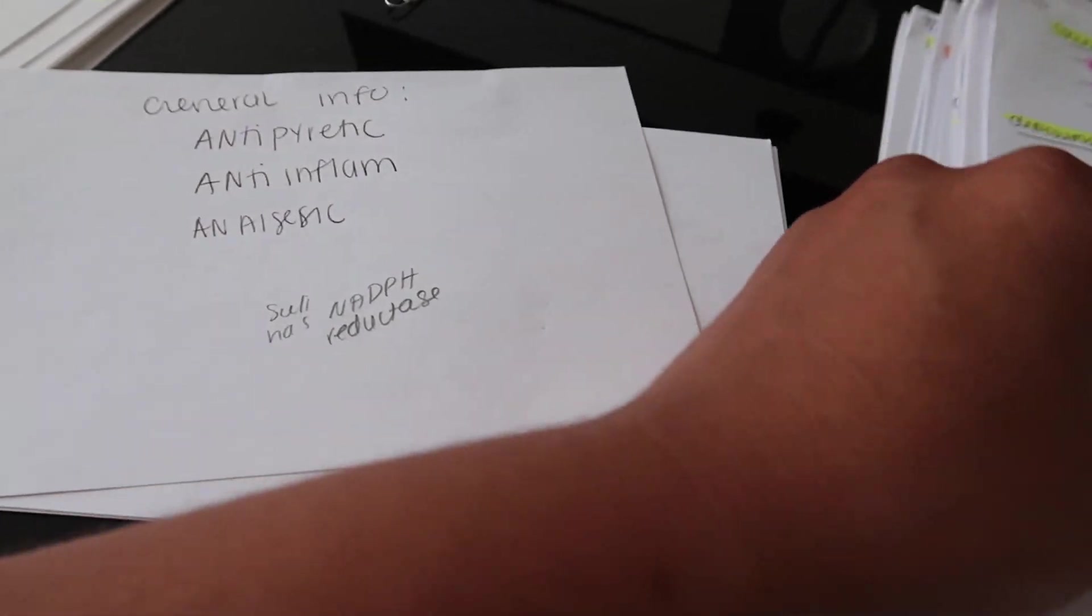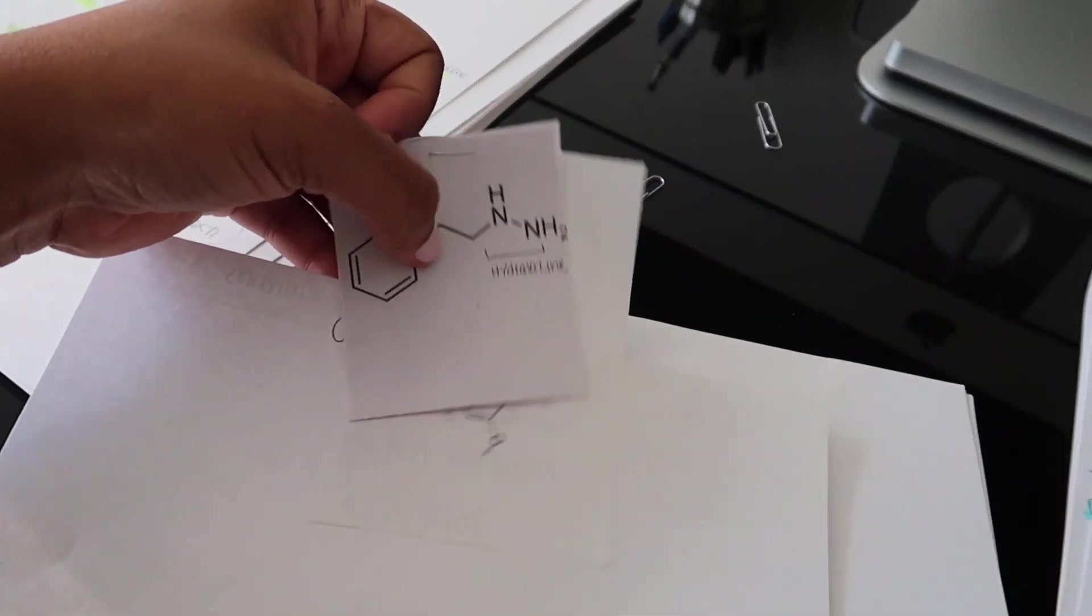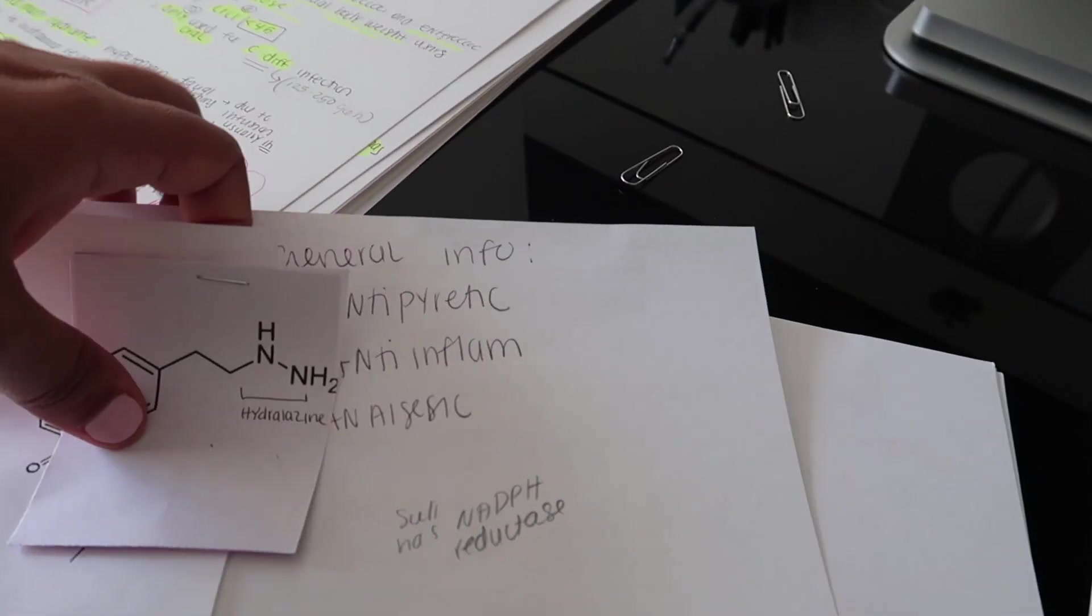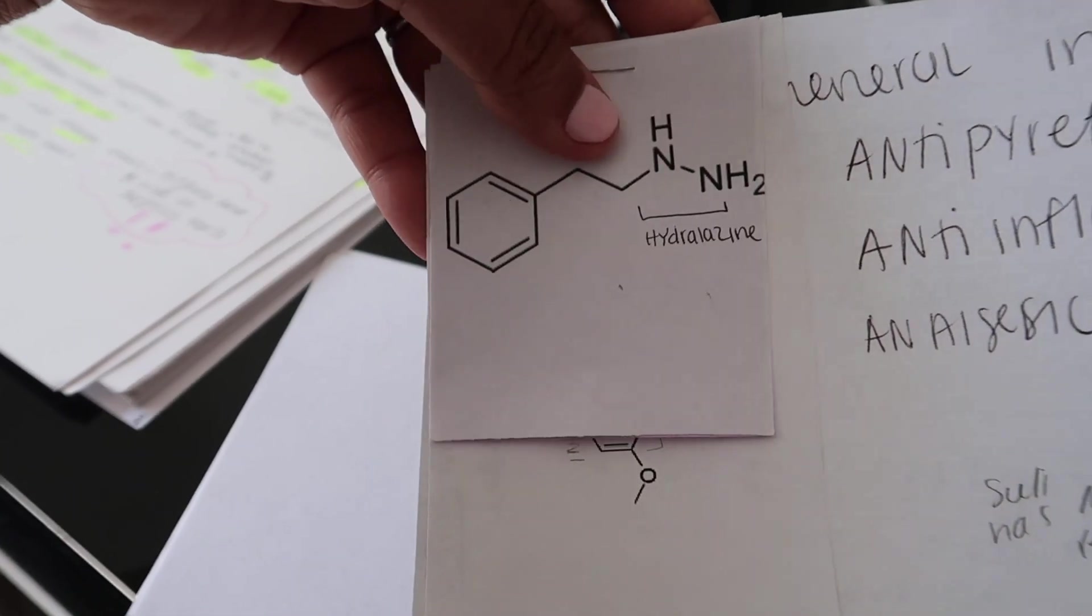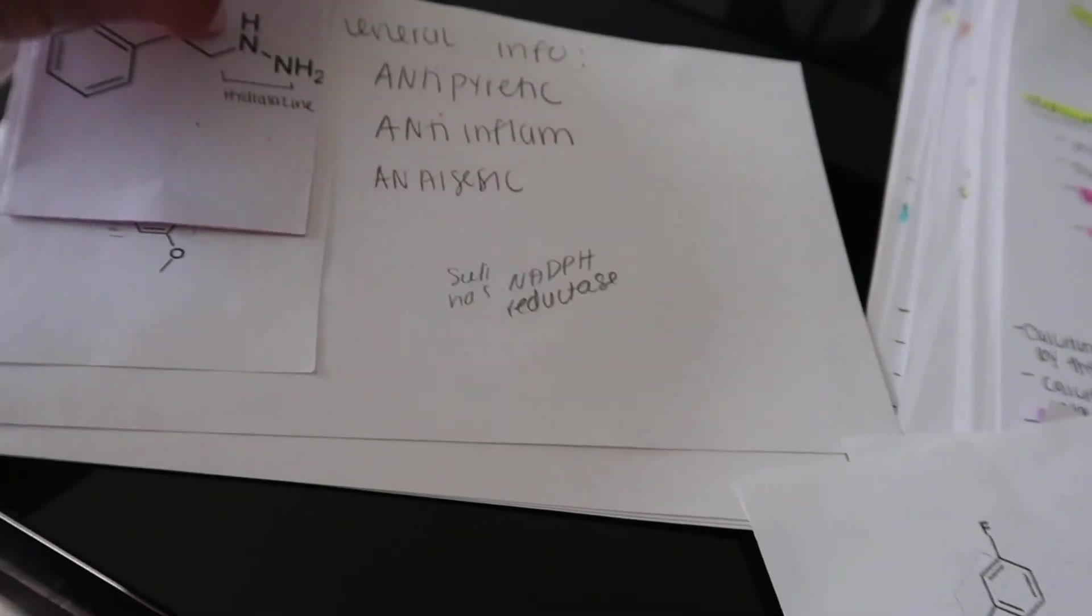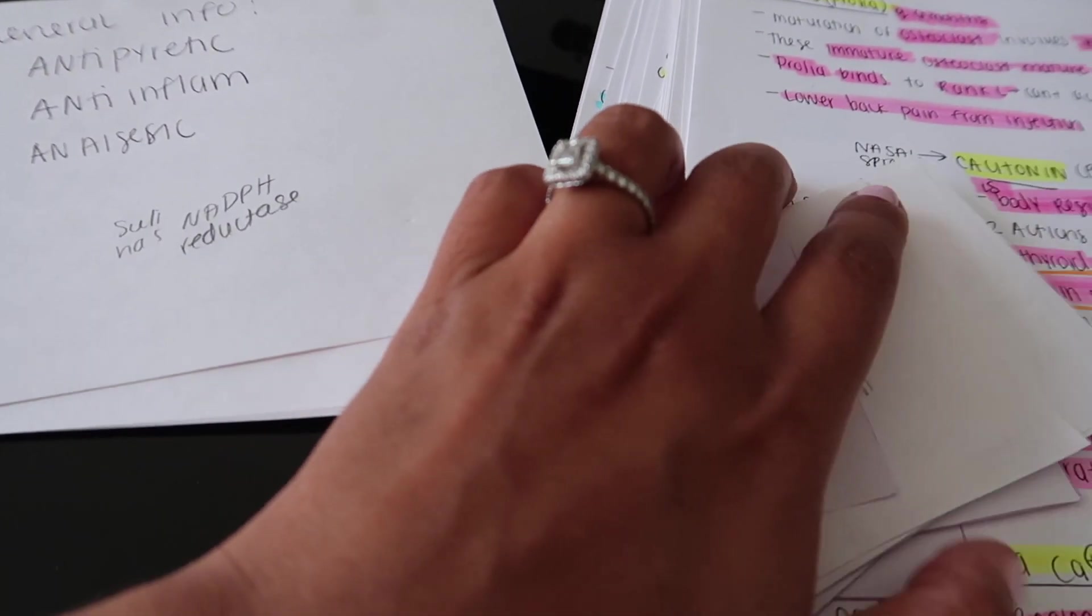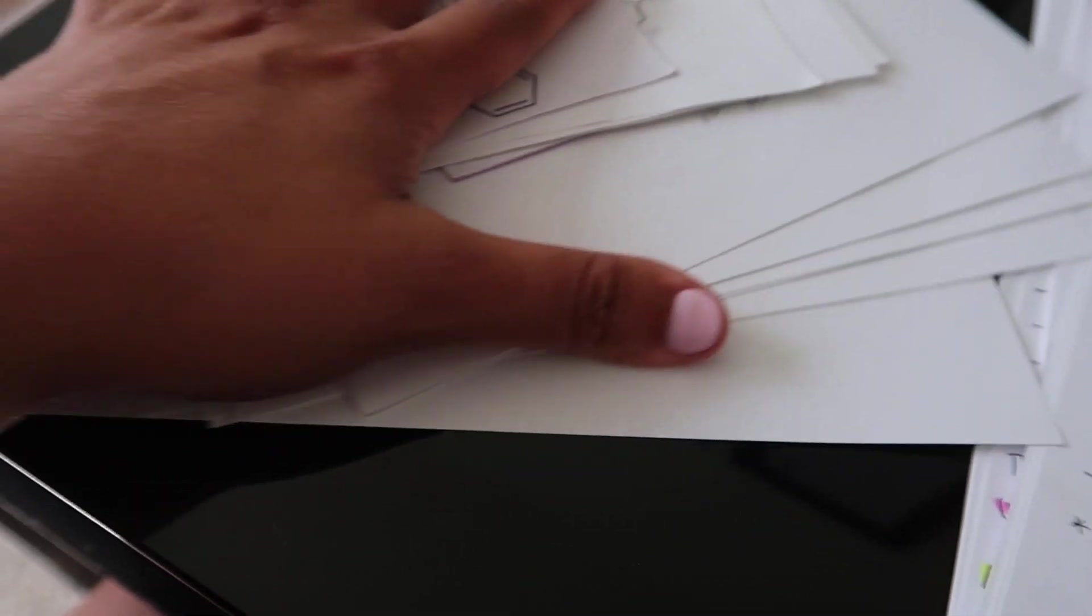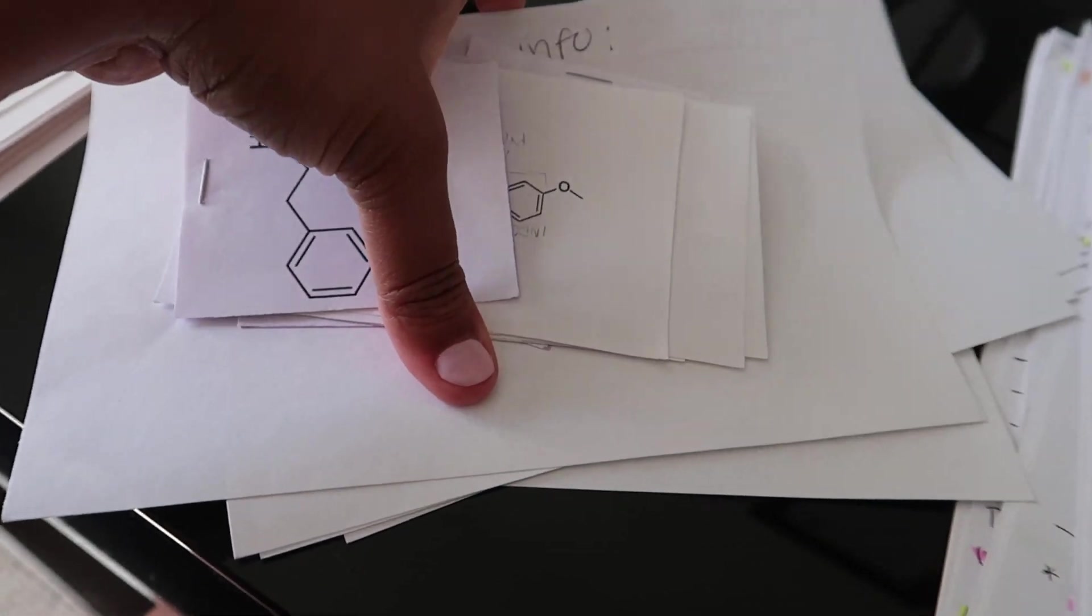And then I would have the drug class along with it. So then this would be my general information on the drugs, I'd have my drug cards with it, and I would have them in sections. That's what I did for medicinal chemistry. I hope this works for you guys. If it doesn't, I'm sorry.